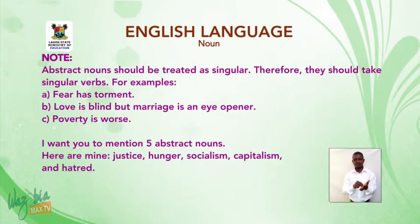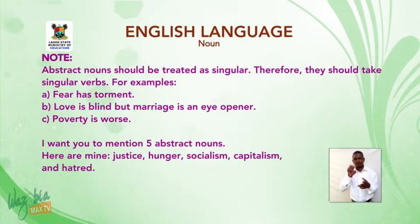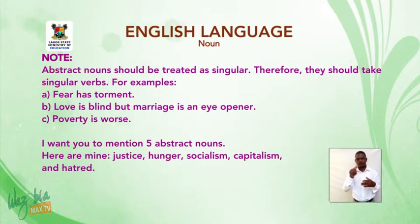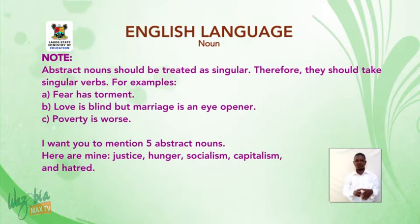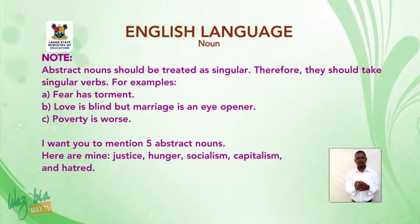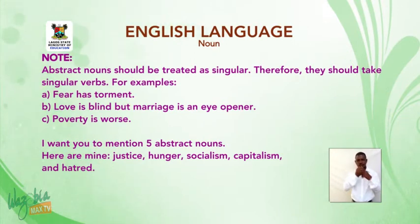Note: abstract nouns should be treated as singular. Therefore, they should take singular verbs. For example: 'Fear has torments.' 'Love is blind, but marriage is an eye-opener.' 'Poverty is worse.' Five more abstract nouns: justice, hunger, socialism, capitalism, and hatred.